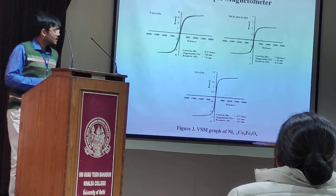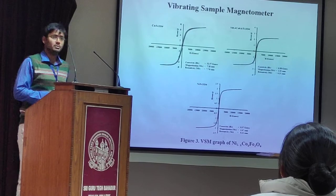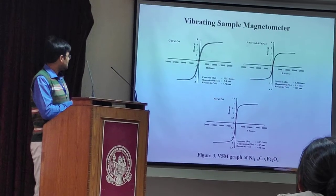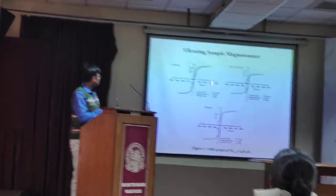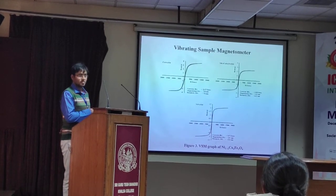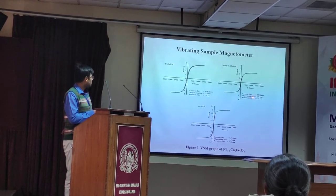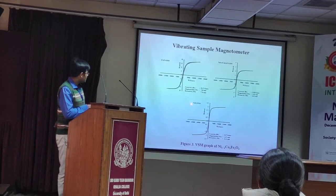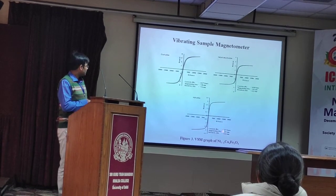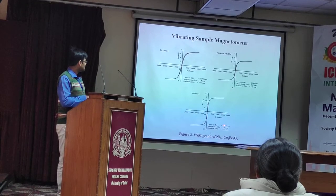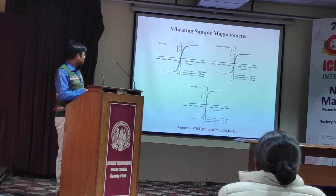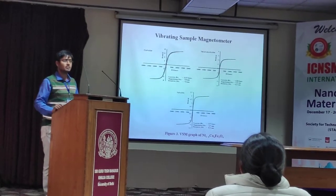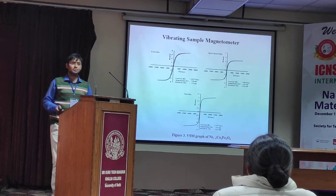I sent my material to IIT Pauvai for vibrating sample magnetometry (VSM). The first sample is CoFe2O4, the second is the mixed Ni-Co ferrite, and the third is pure NiFe2O4. CoFe2O4 is the most highly magnetized material and has the largest coercivity. The mixed sample has saturation magnetization of 2.41 and coercivity of 0.38. NiFe2O4 has saturation magnetization of 2.07 and coercivity of 0.37. It is not a superparamagnetic material but is close to superparamagnetic behavior, since the coercivity HC is not zero.